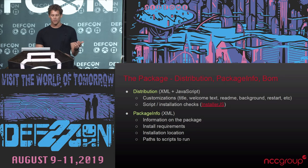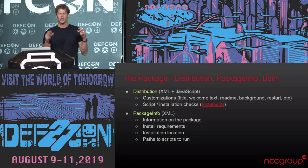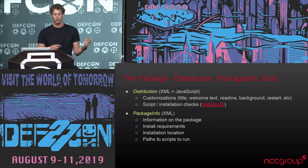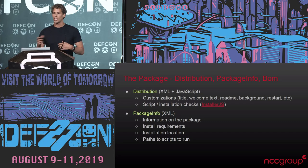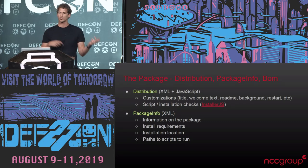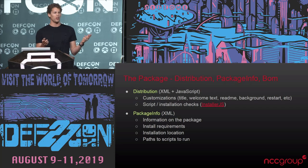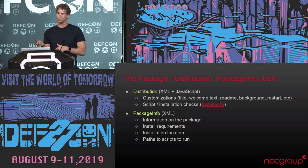You have the package info. This is more information about the individual packages installed with that distribution. It has the specific requirements of that package, the install location where that package payload will be extracted to, and then it will also include any paths to the scripts that will be run.